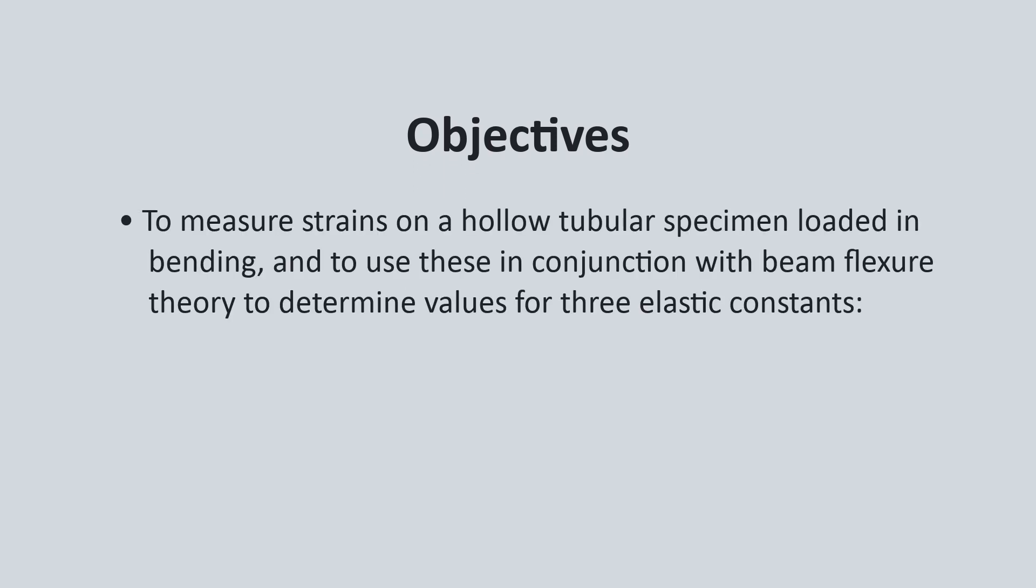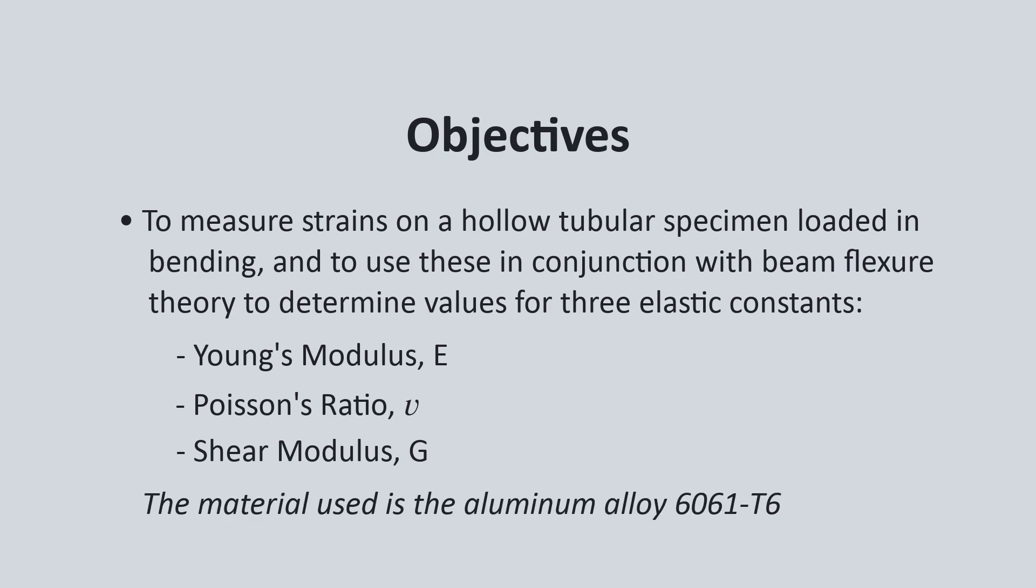One, to measure strains on a hollow tubular specimen loaded in bending, and to use these in conjunction with beam-flexure theory to determine values for three elastic constants: Young's modulus E, Poisson's ratio nu, and the shear modulus G. The material used is the aluminum alloy 6061-T6.